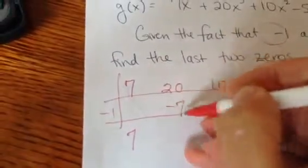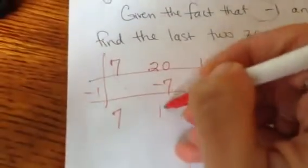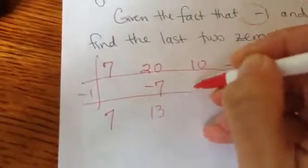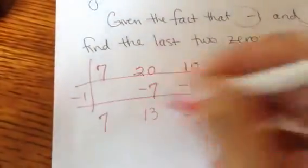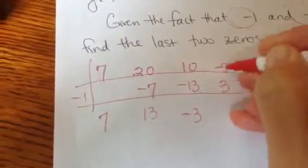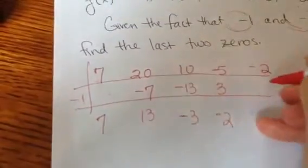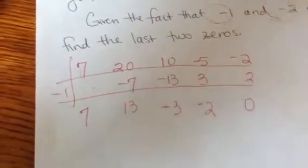This is going to give me negative 7. That's going to give me 13. Because remember, you add. If you multiply, you're going to get negative 13. Add. That gives me negative 3. Multiply on the diagonal. That's a positive 3. When you add, you get negative 2. That gives me a positive 2. And when I add, I get 0. So, woo-hoo!